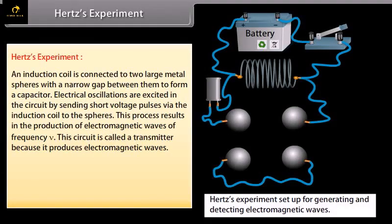Hertz's experiment. An induction coil is connected to two large metal spheres with a narrow gap between them to form a capacitor. Electrical oscillations are excited in the circuit by sending short voltage pulse via the induction coil to the spheres, charging one sphere positive and the other negative. In the ionized state, the electrons and ions in the air gap oscillate back and forth with the same frequency nu as that of the circuit. This process results in the production of electromagnetic waves of frequency nu. This circuit is called a transmitter because it produces electromagnetic waves.